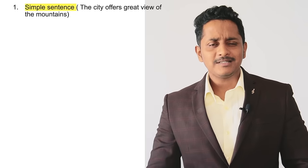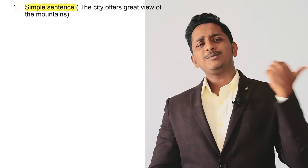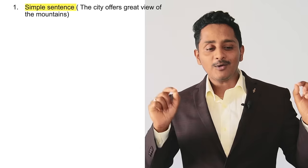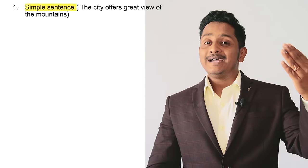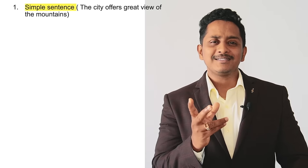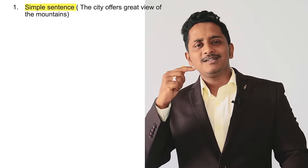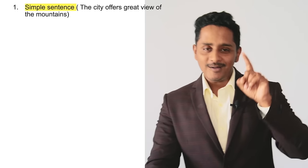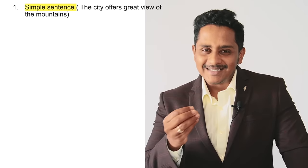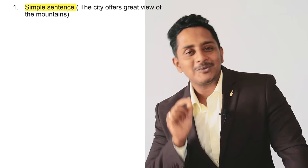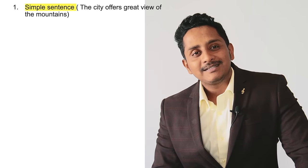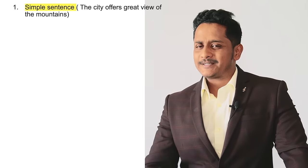That's what your grammar and grammatical range and accuracy is going to get. Grammar and general linguistic range is your ability to write in different ways to convey effectively. The template will automatically cover all the things. Now let's understand simple, compound and complex sentences, and then go to how to minimize errors. A simple sentence is, as the name suggests, very simple — no connectors used. 'My name is Nakul. I am teaching English right now. The city offers a great view of the mountains.' These are all simple sentences.